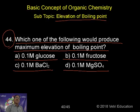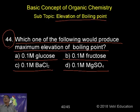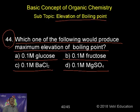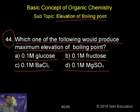There are four types of colligative properties we study at the higher secondary level: relative lowering of vapour pressure, elevation of boiling point, depression of freezing point, and osmotic pressure.